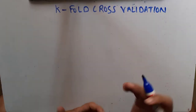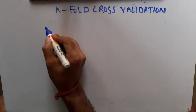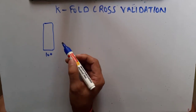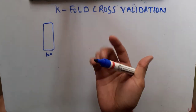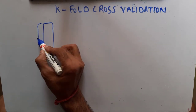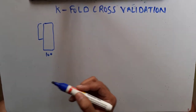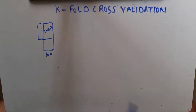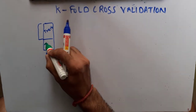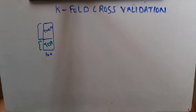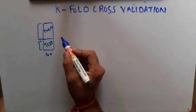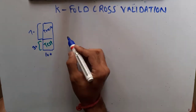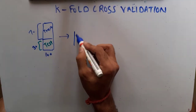Assume that we have a total dataset of 100 items. In machine learning, we basically divide our data into two parts: train and test. Assume that the train set is 70% and the test set is 30%, and then we train our model on this training data.